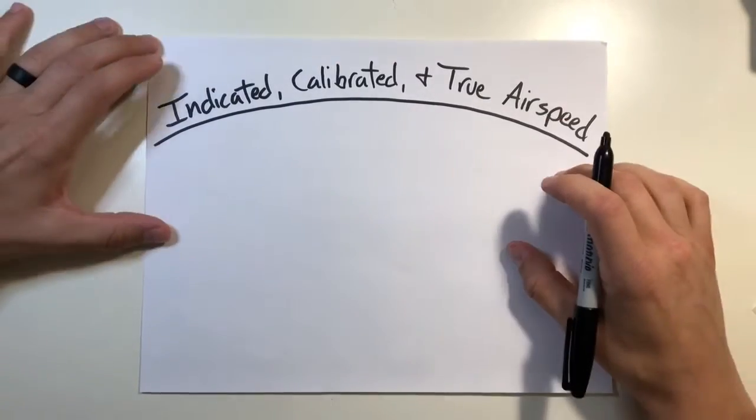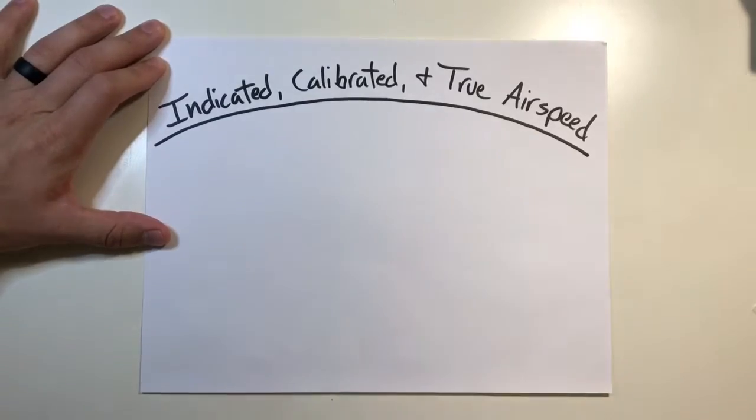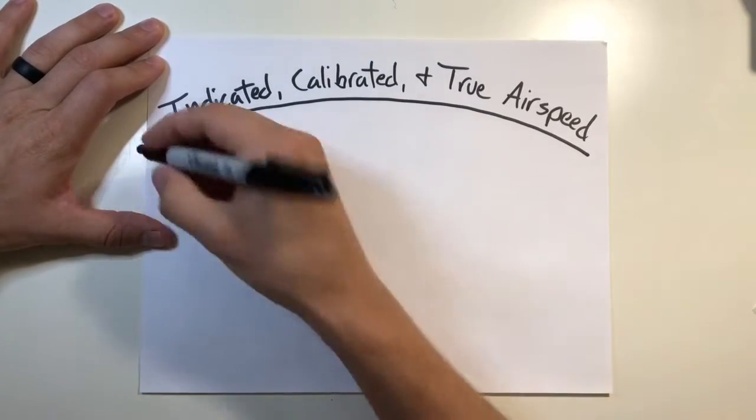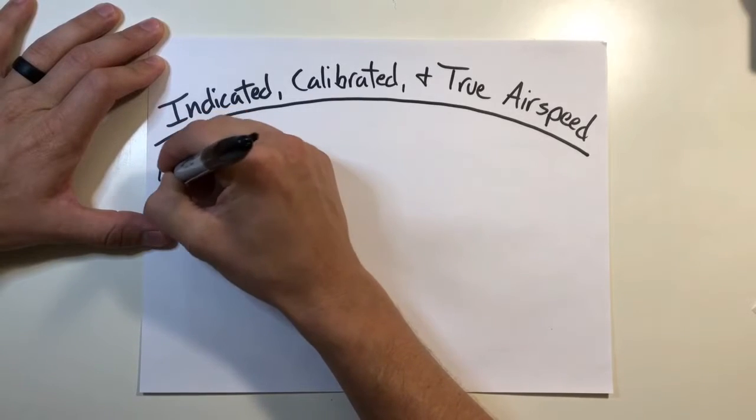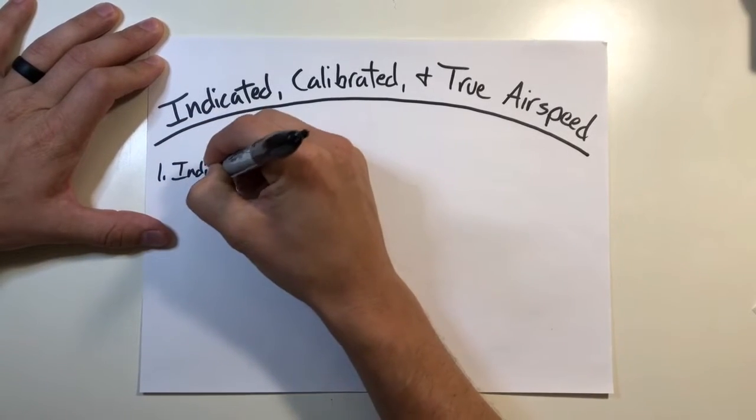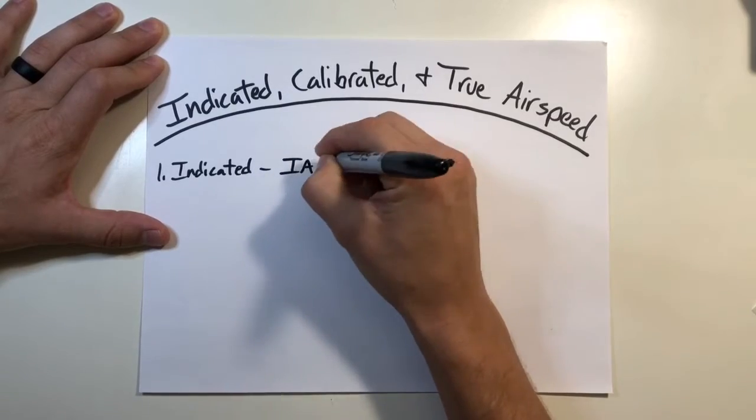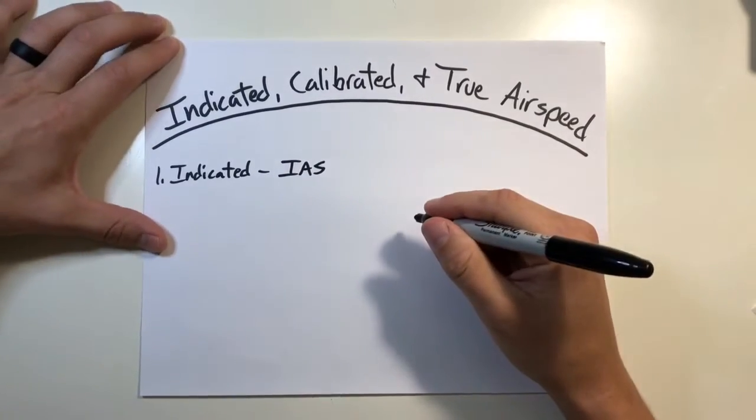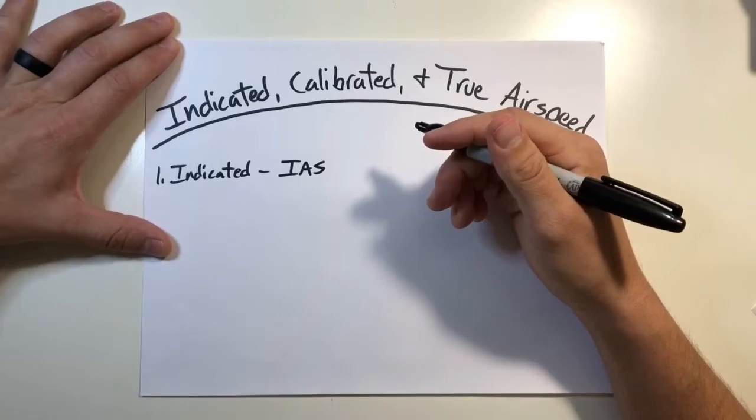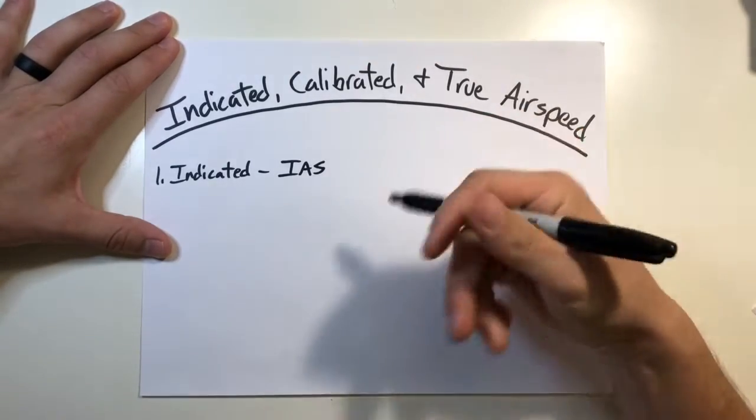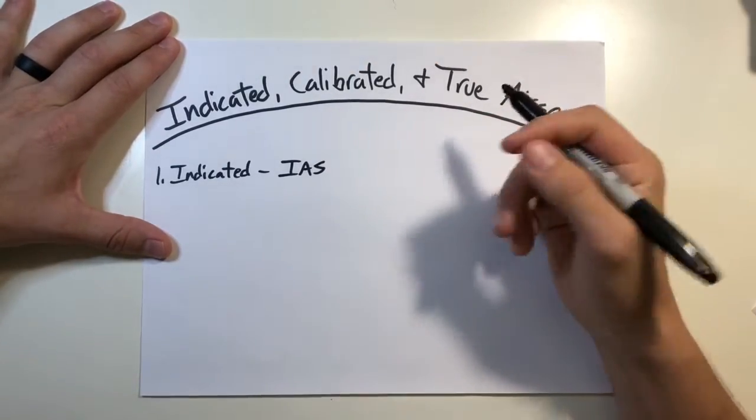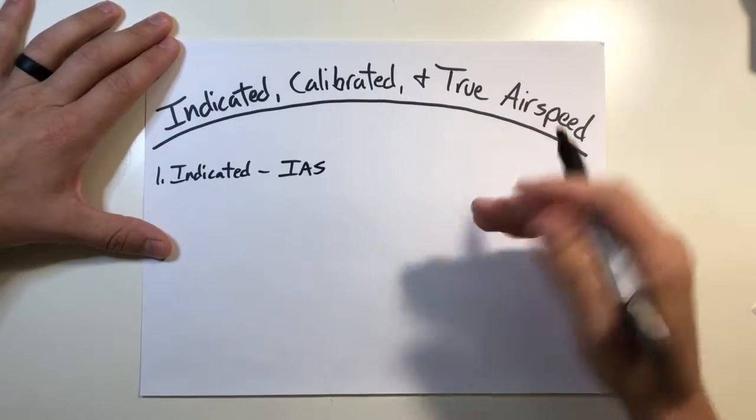Now the most basic way to measure airspeed is going to be the difference in pressure between a pitot tube and a static port. This is going to give us an indicated airspeed, usually abbreviated as IAS. This is a difference in pressure. So it works by comparing a ram air pressure entering a pitot tube and comparing it to the static pressure measured by a static port.